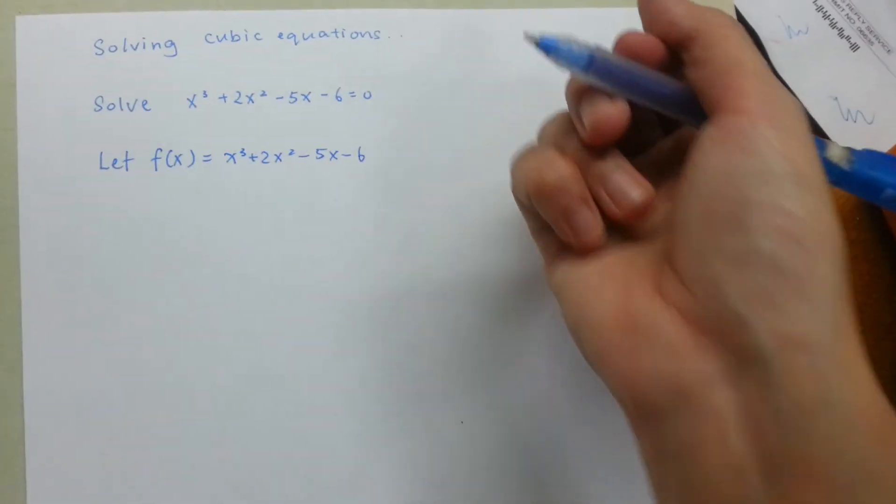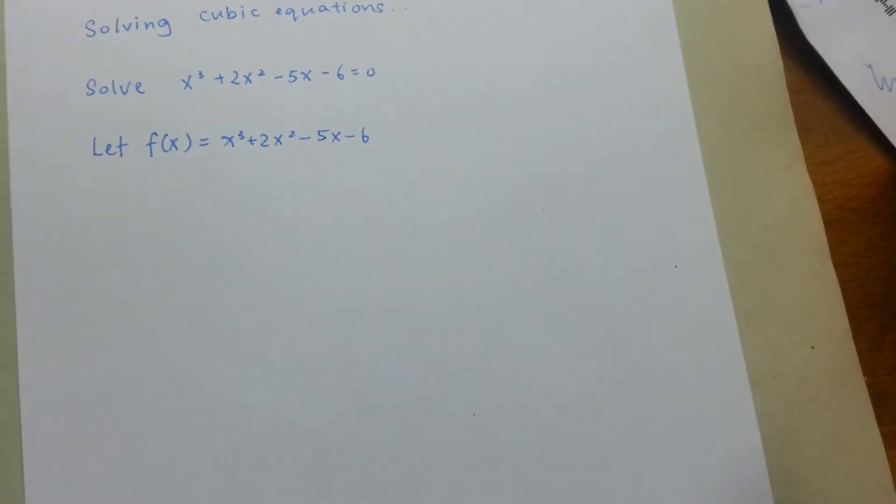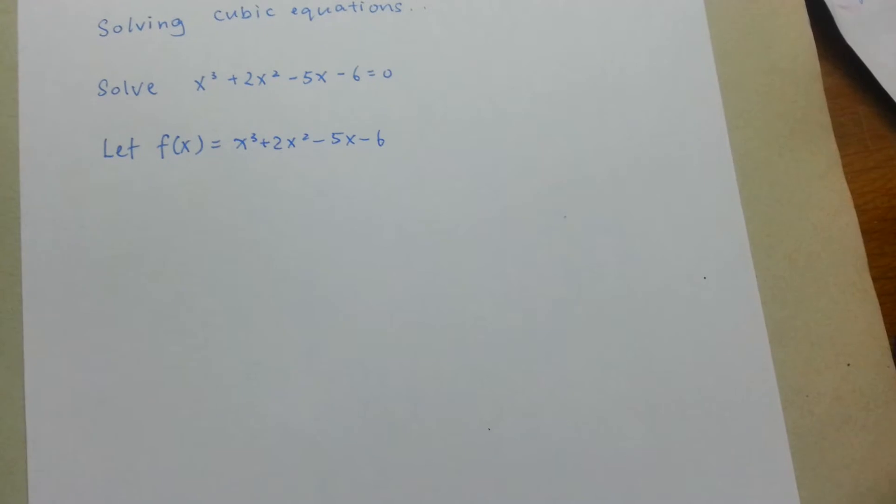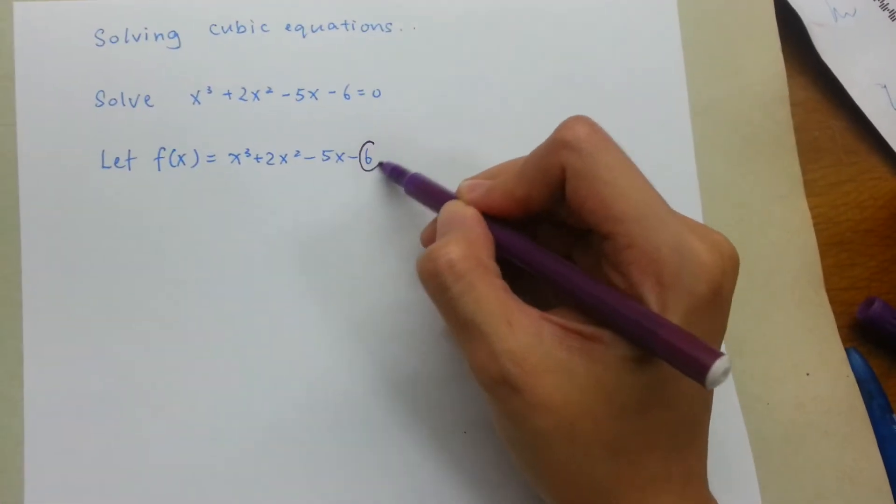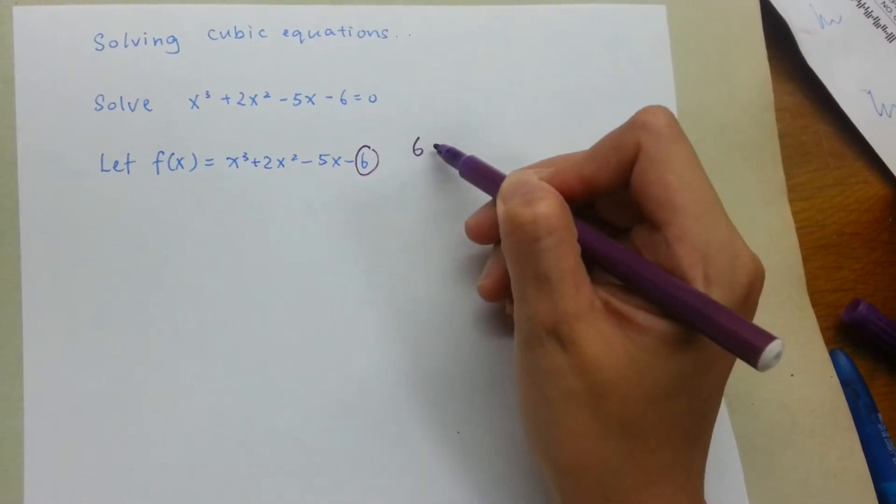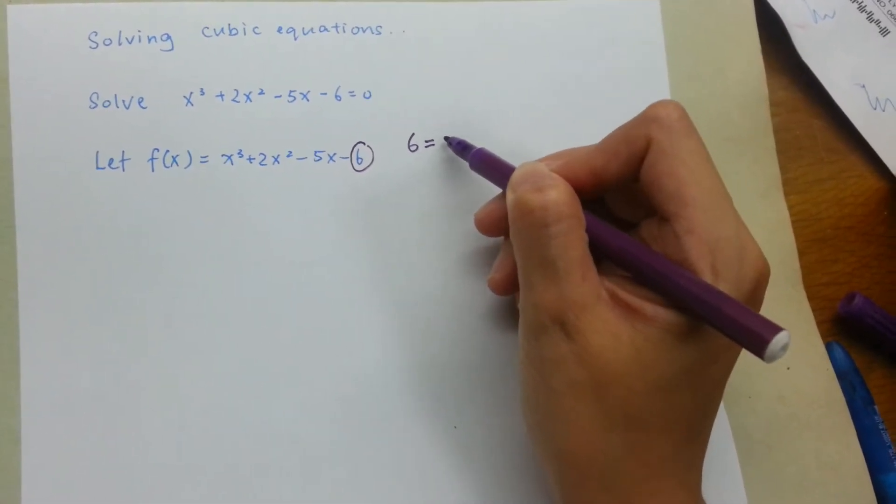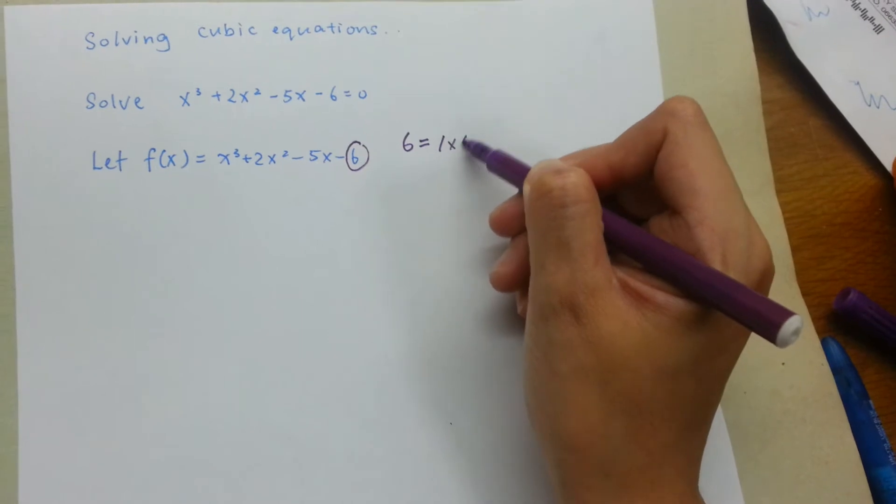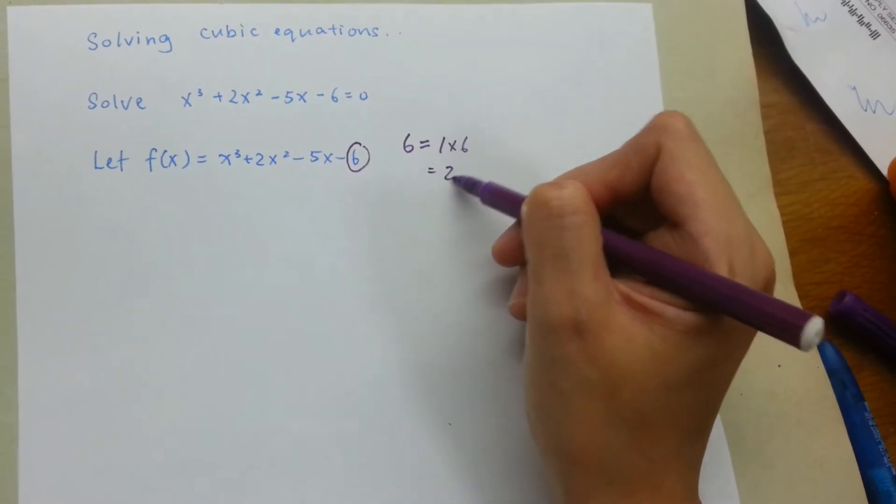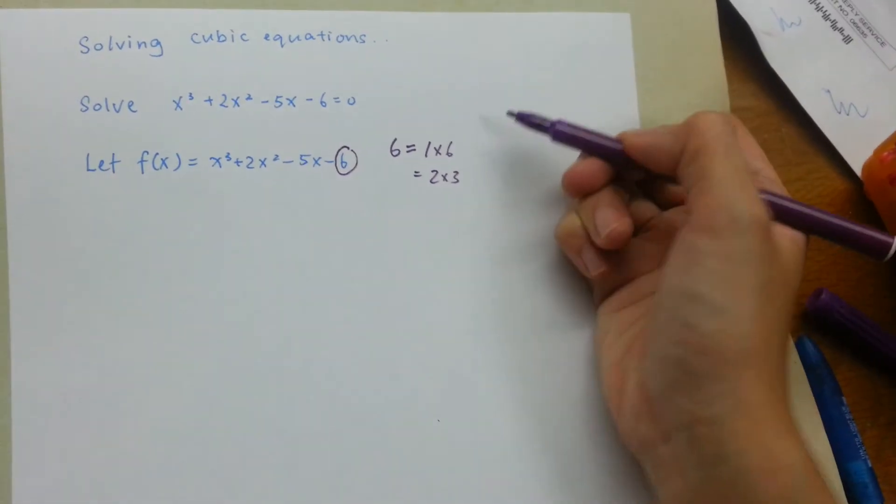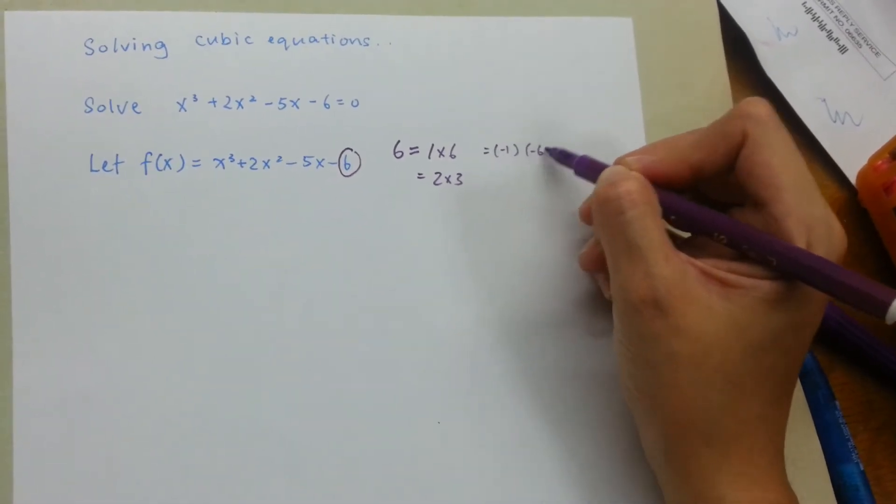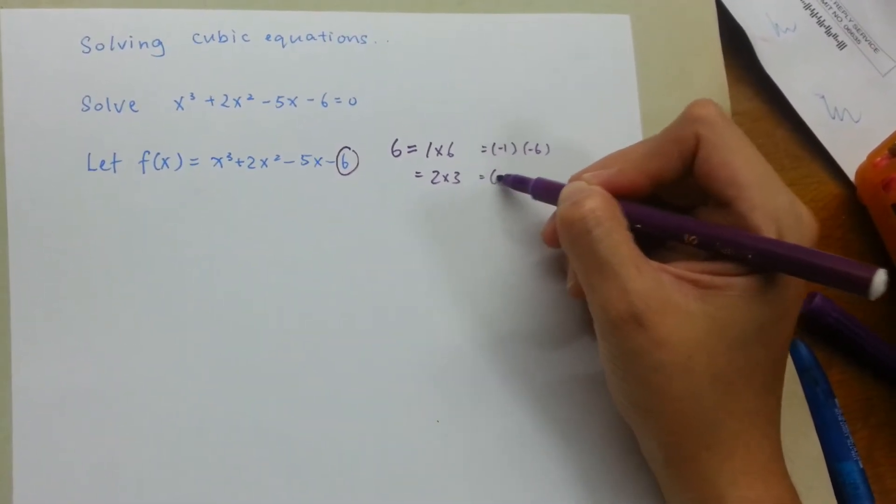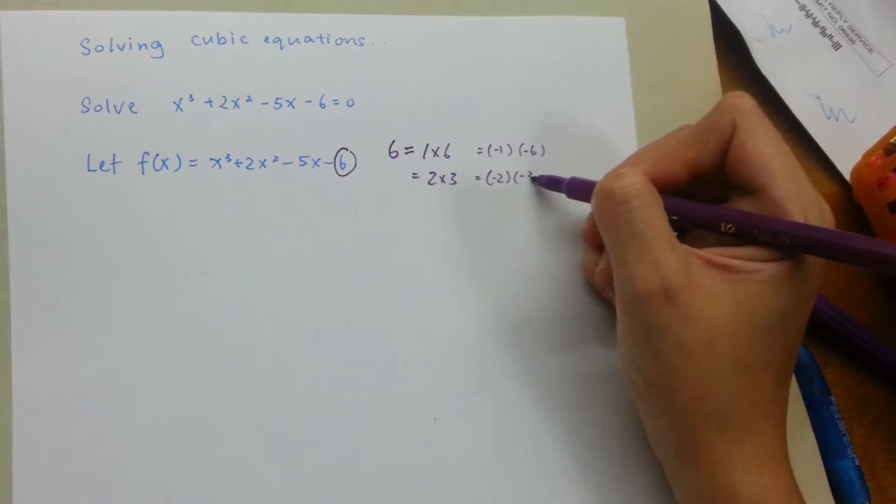Next, I'm going to think of the factors that will give me the constant term. Here, the constant term is 6, and we can factorize 6 into 1×6 or 2×3, and of course -1×(-6) and -2×(-3).